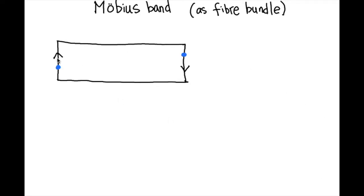So in particular, a point here is identified with the point here. That's a Möbius band, but we want to see it through the light of a fiber bundle.